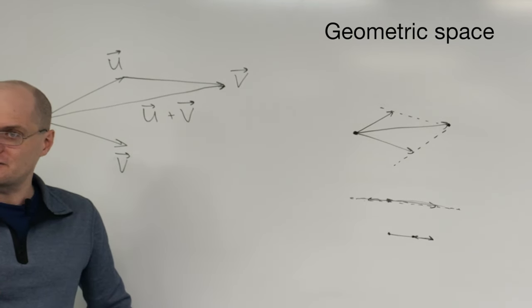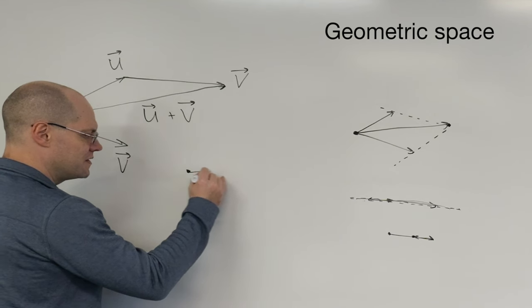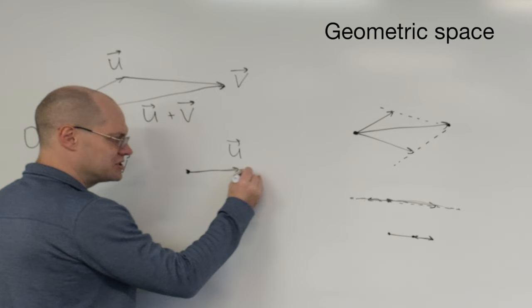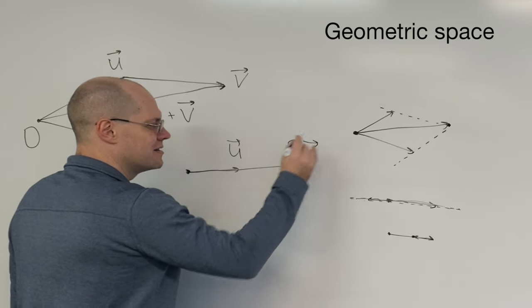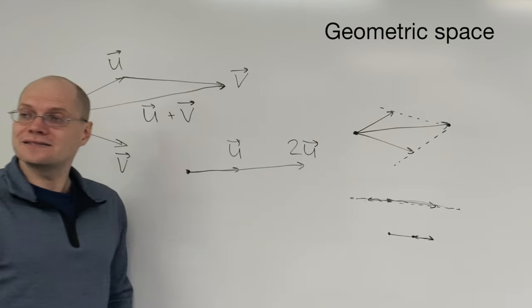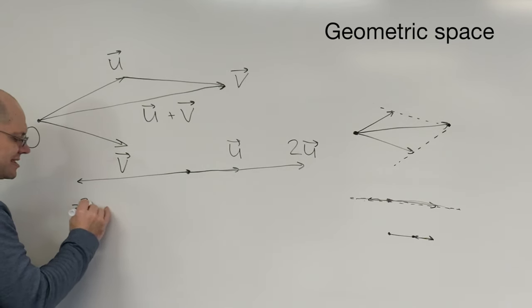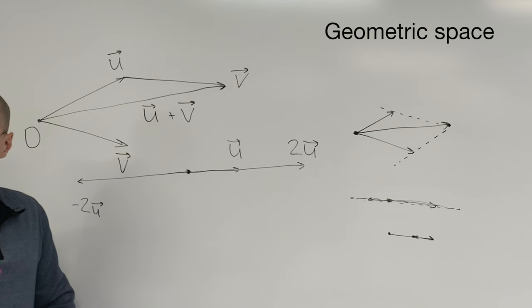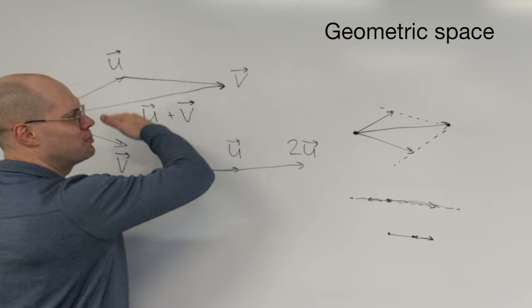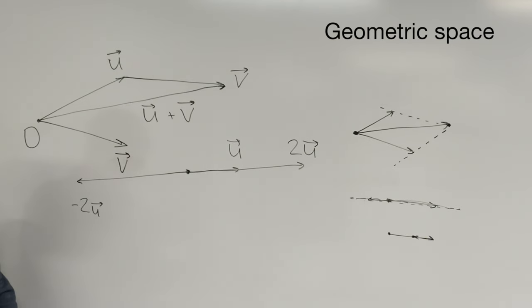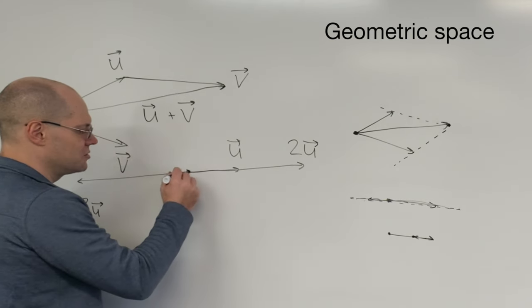For completeness, I should also define what it means to multiply a vector by a number. That is simple. If this is the vector u, then 2u is a vector that also starts at the origin, as all vectors do, points in the same direction and is twice as long. You basically scale the magnitude of the vector by the factor that's the number you're multiplying by. If the number is negative, for example minus 2u, you change the sense. It's nice to distinguish between direction and sense. Direction means what direction you're pointing, and sense narrows it down between this and the opposite direction. When you multiply it by zero, it becomes the zero vector.